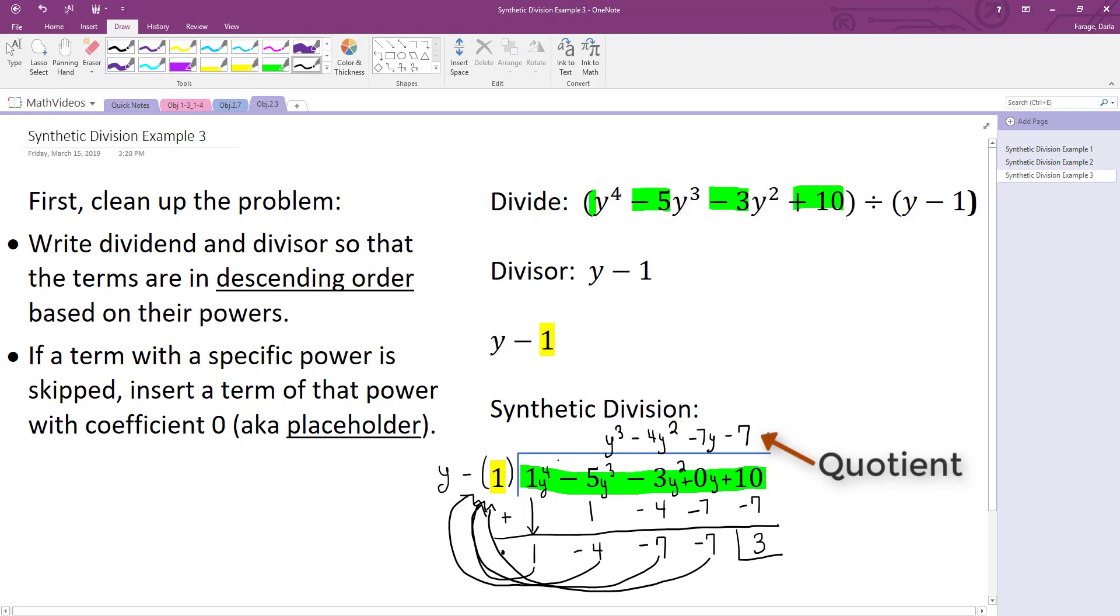And then since it's a positive remainder, I'll put plus and then I put my remainder over my divisor here, which is y minus 1. And that is our complete answer.